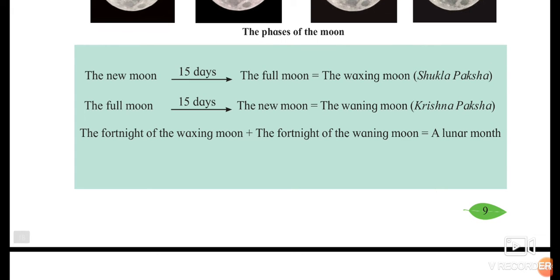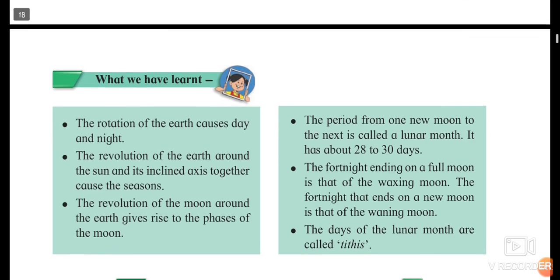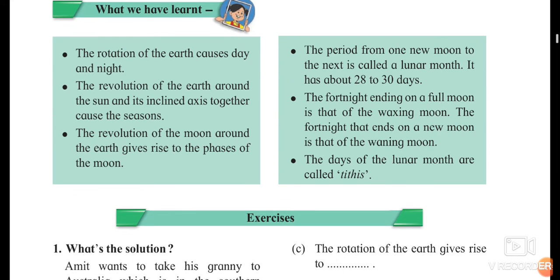What we have learned, we will just recall here. The rotation of the earth causes day and night. Because of earth's rotation, we can see either day or night. The revolution of the earth around the sun in its inclined axis together causes the seasons. Because of the axis and the revolution of earth, the seasons are determined.